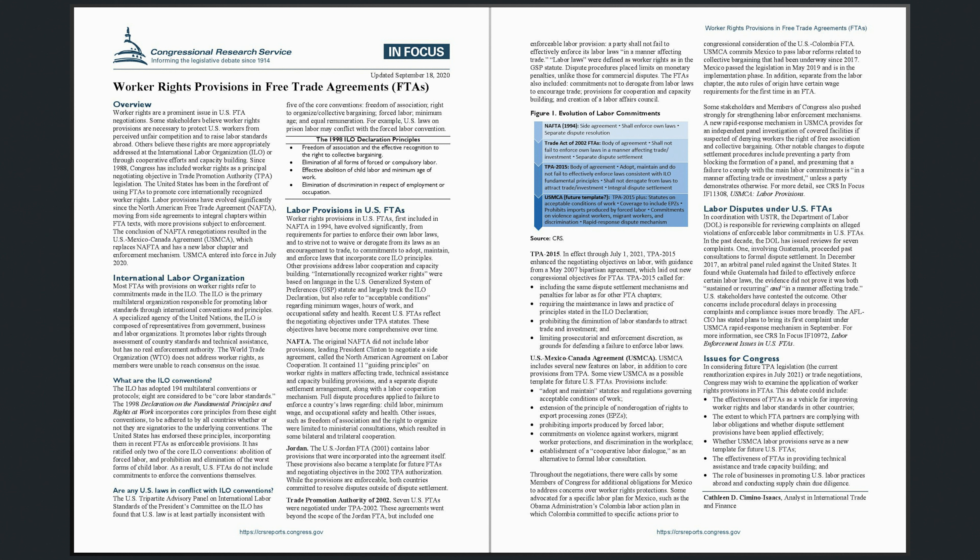Jordan. The U.S.-Jordan FTA, 2001, contains labor provisions that were incorporated into the agreement itself. These provisions also became a template for future FTAs and negotiating objectives in the 2002 TPA authorization. While the provisions are enforceable, both countries committed to resolve disputes outside of dispute settlement.